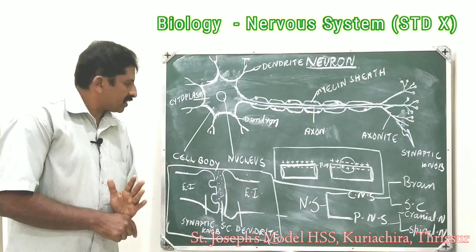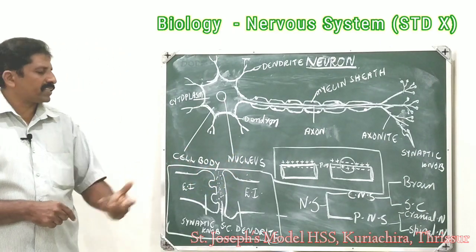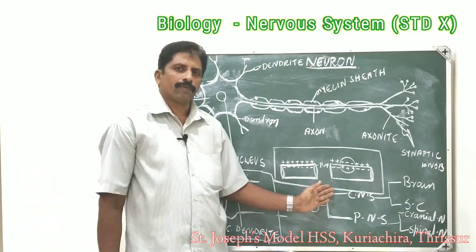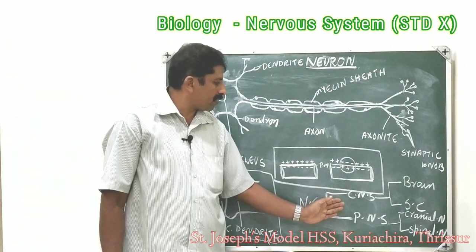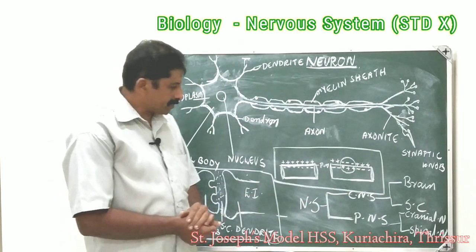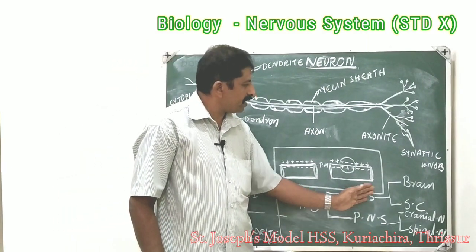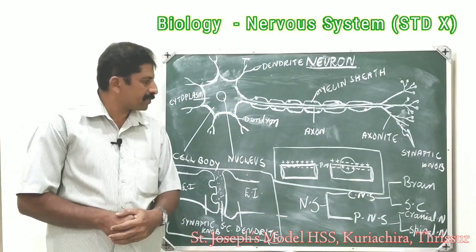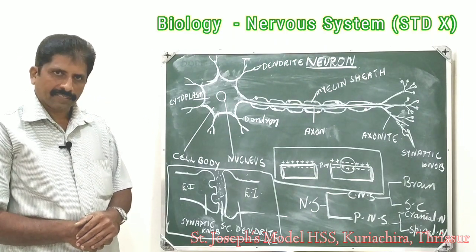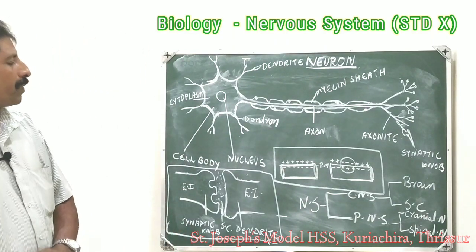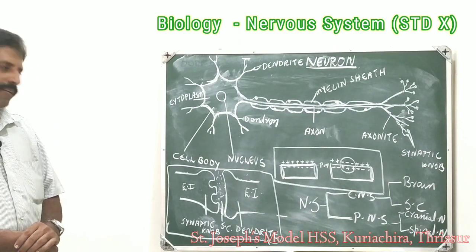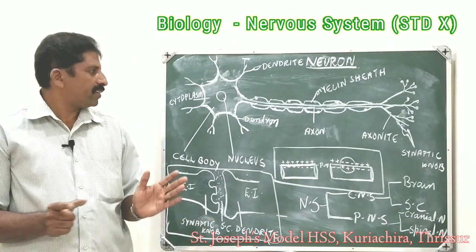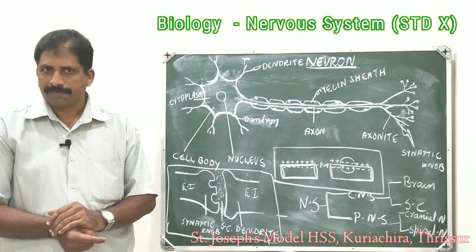The nervous system is divided into two: the central nervous system and the peripheral nervous system. The central nervous system consists of the brain and spinal cord. The peripheral nervous system consists of cranial nerves and spinal nerves — cranial nerves are 12 pairs and spinal nerves are 31 pairs. I think you have already studied everything regarding the nervous system. Thank you.